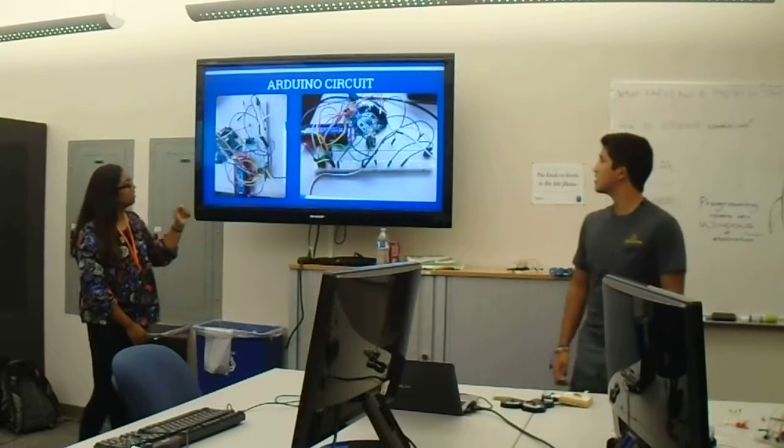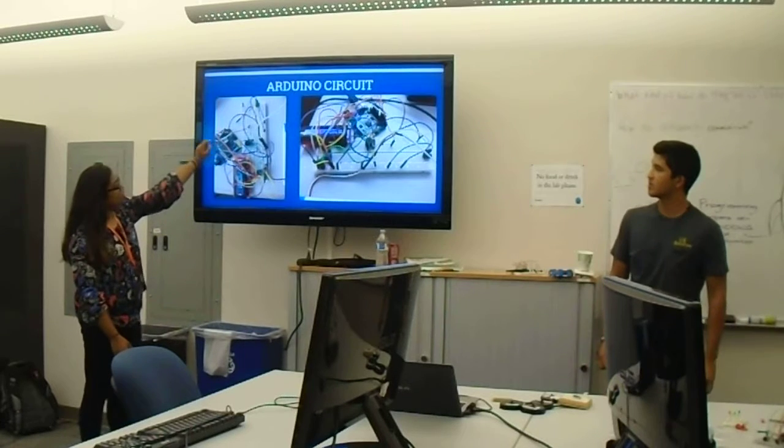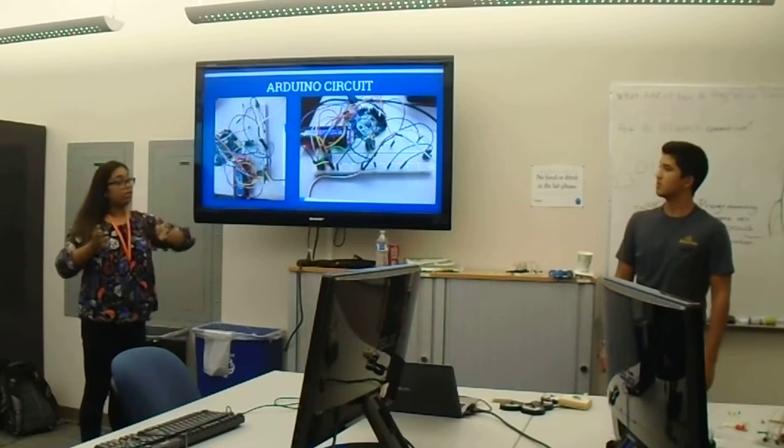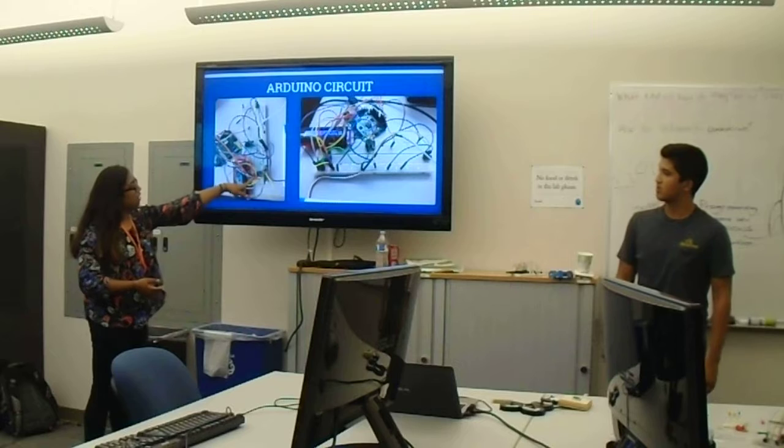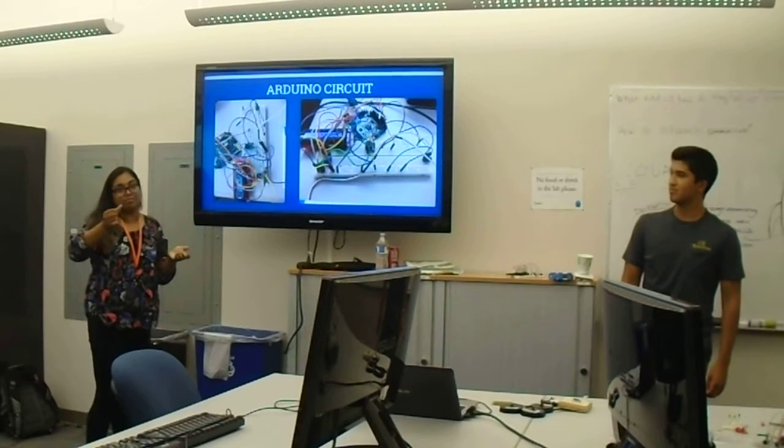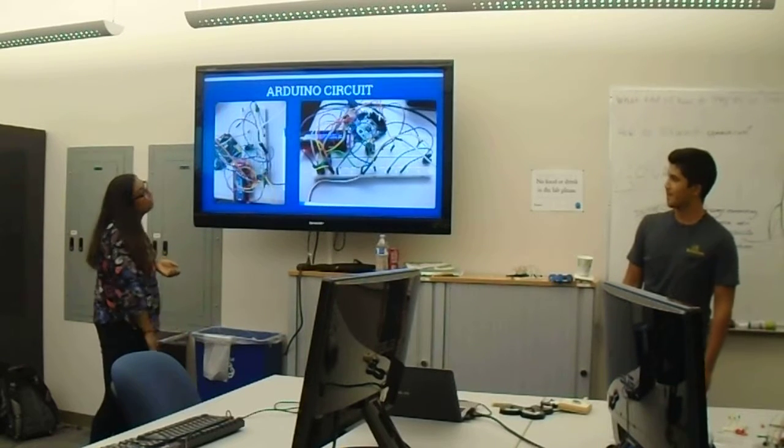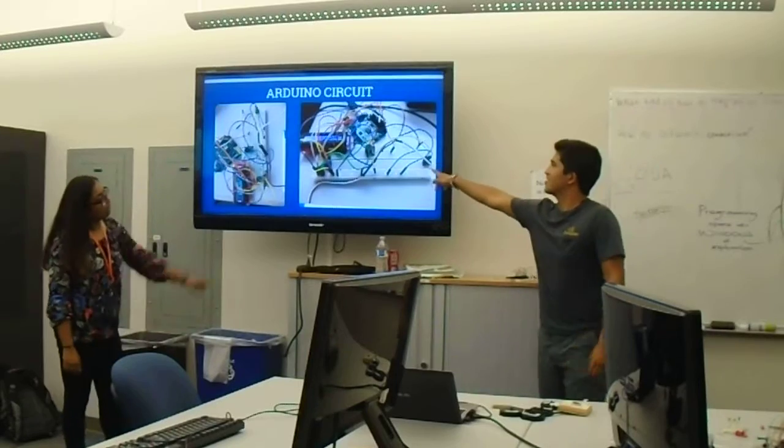This is a picture of our circuit. As you can see, this is the speaker in the middle. This is the Arduino. We used a longer breadboard. And here's the trim pot that is used to increase and decrease the brightness of the LCD screen. And our switch is right here.